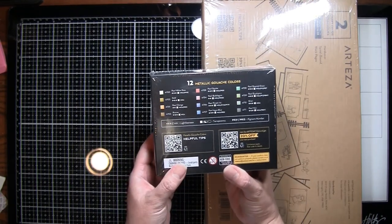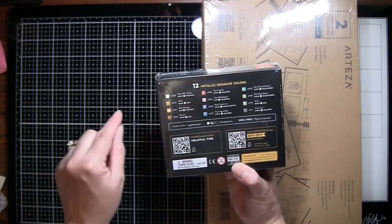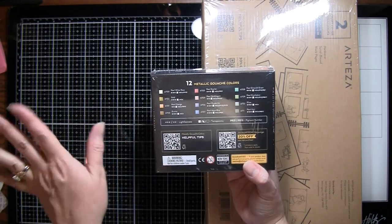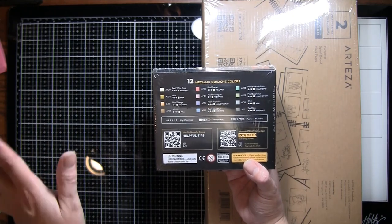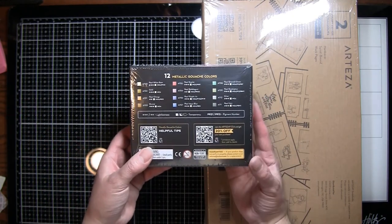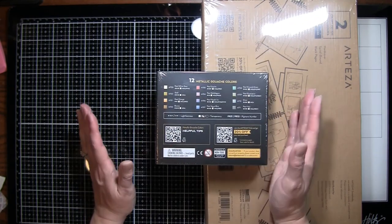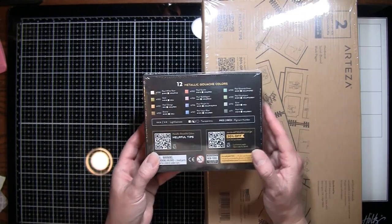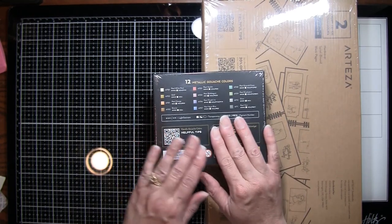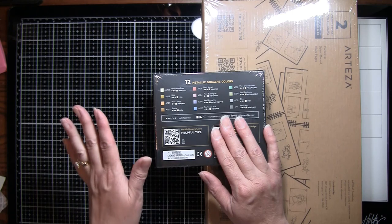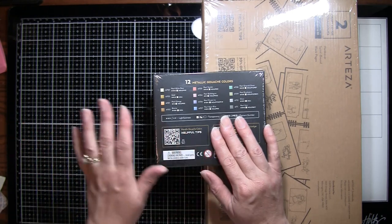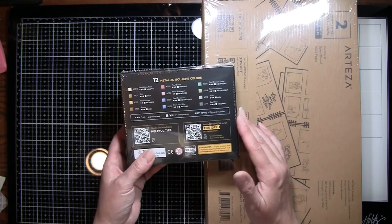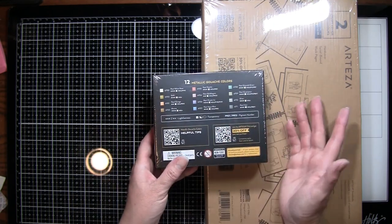This is very kind of Arteza. I was blown away that they send me things to try out but then they're also going to send some goodies to one of my subscribers. This set of gouache is the metallic gouache colors. So there's 12 colors which you can see there. There's some golds and brownish type colors, reds, pinks, purples, blue, green, and gray. They all have a little bit of a glittery shine but they're not like glitter paint. Gouache tends to dry looking matte, not shiny.